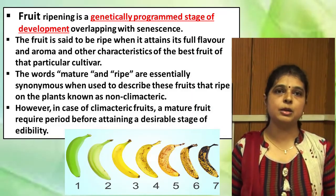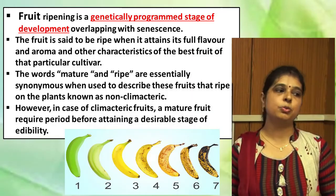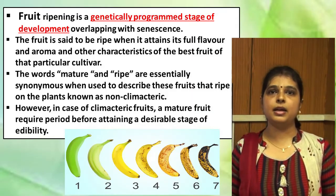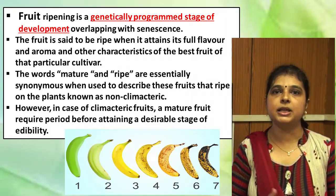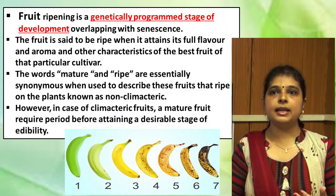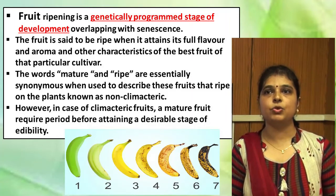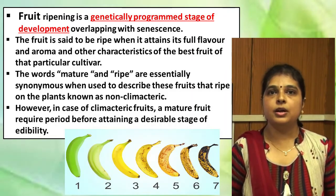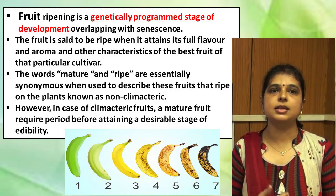Fruit ripening occurs just after maturity and overlaps with senescence. A fruit is said to be ripe when it attains its full color and aroma. For example, if you look at mango or banana — when they are unripe they appear completely green, but when the ripening process starts you will feel the flavor, the aroma, and you will notice changes in color.